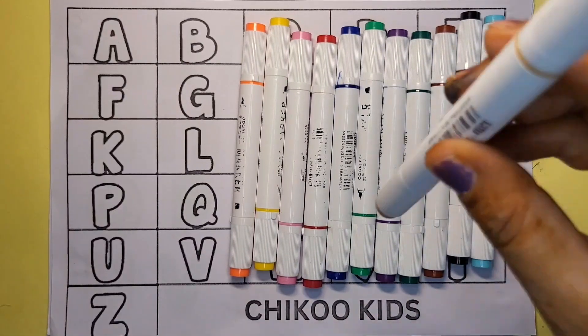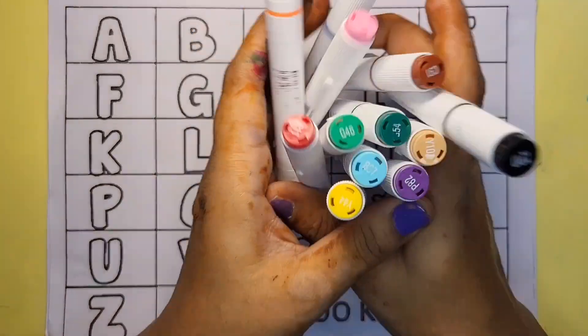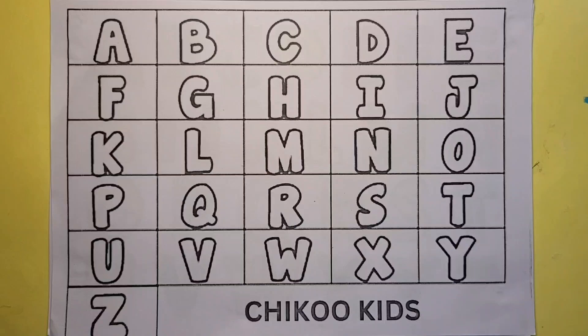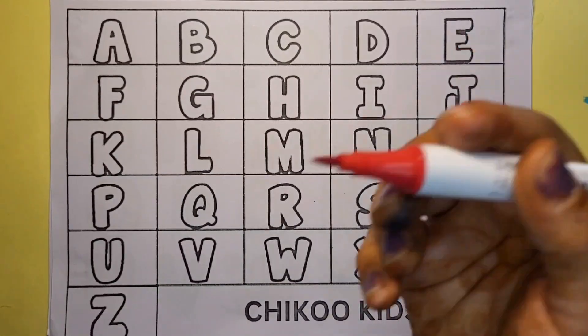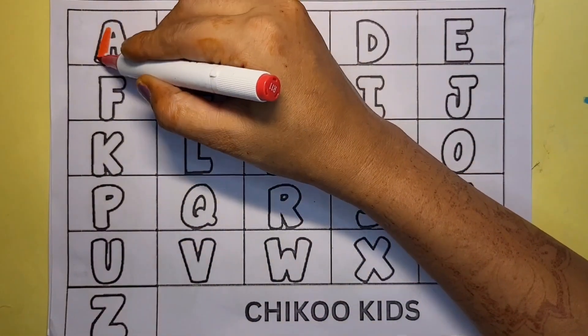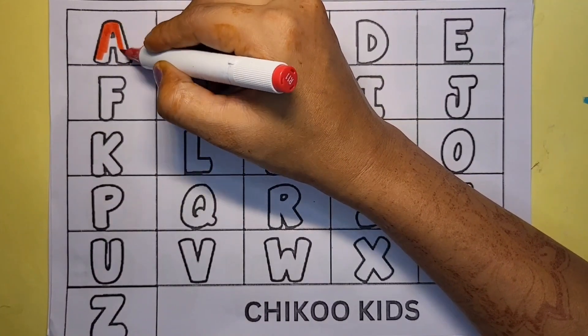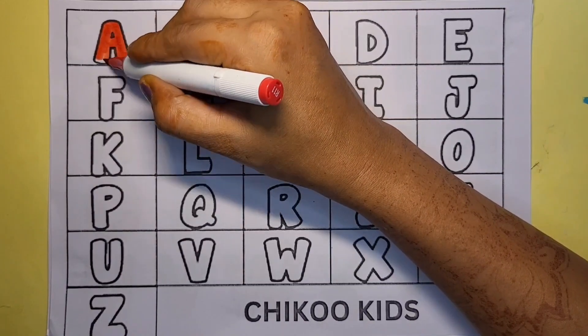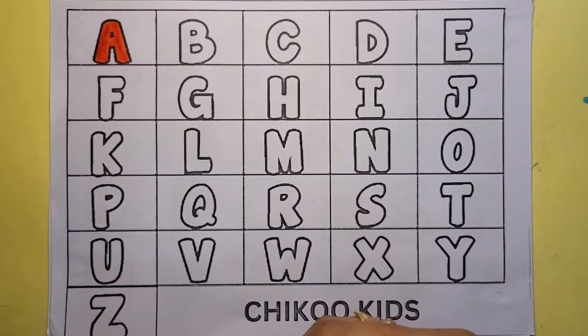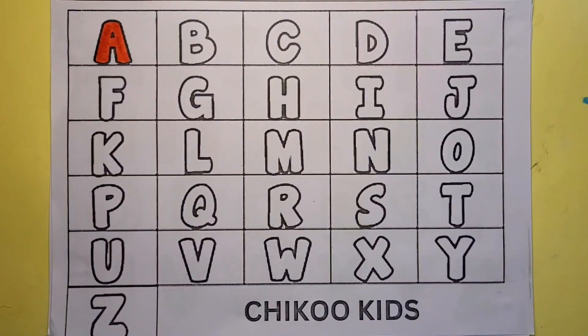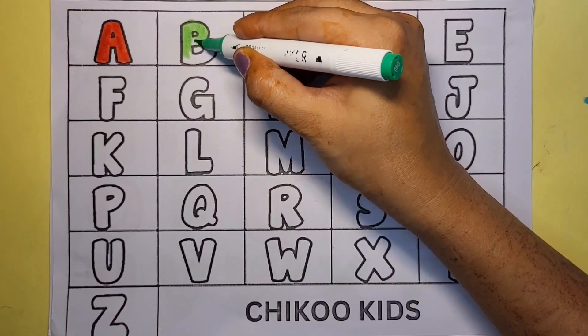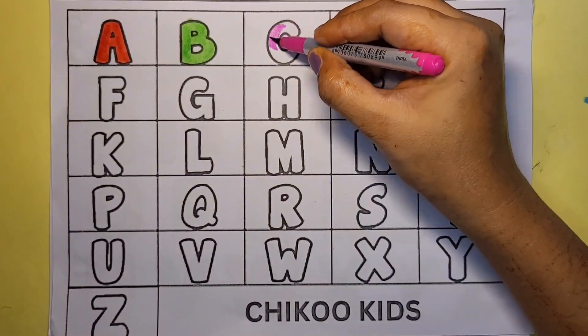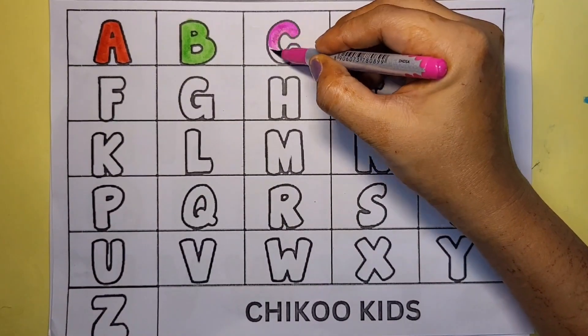Let's start with red color A. A for aeroplane, red color A. Green color B. B for broccoli. Pink color C. C for candy.